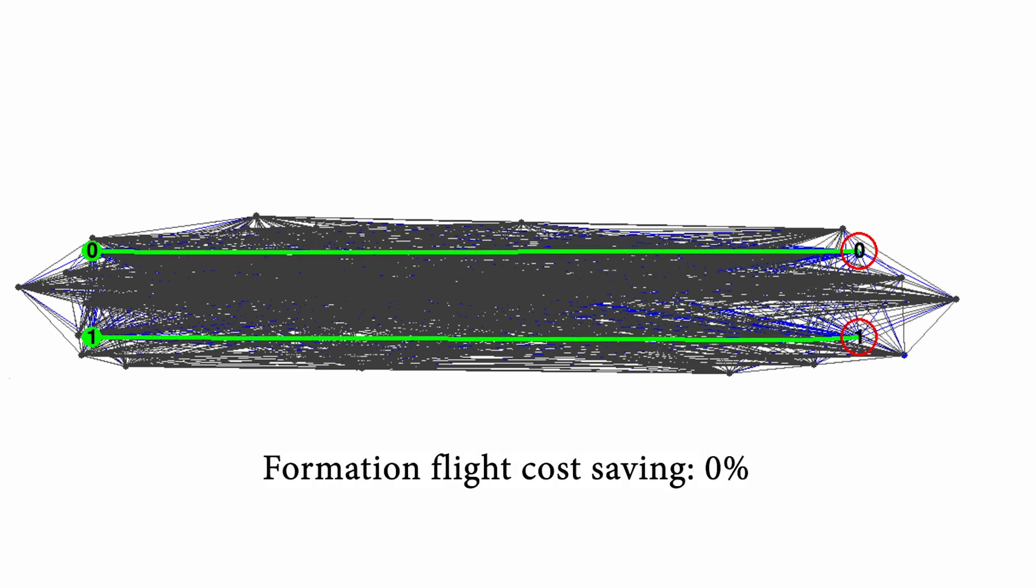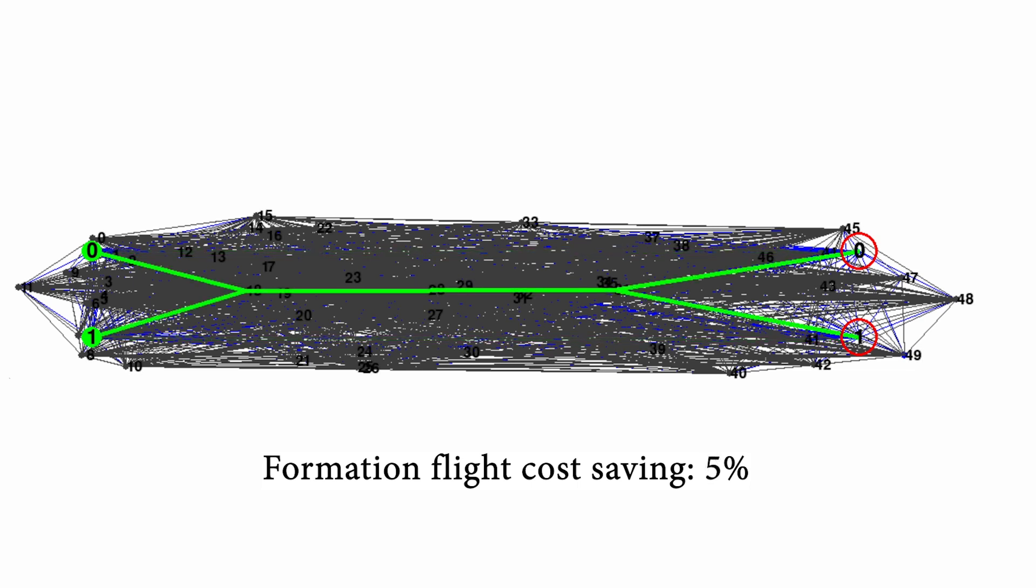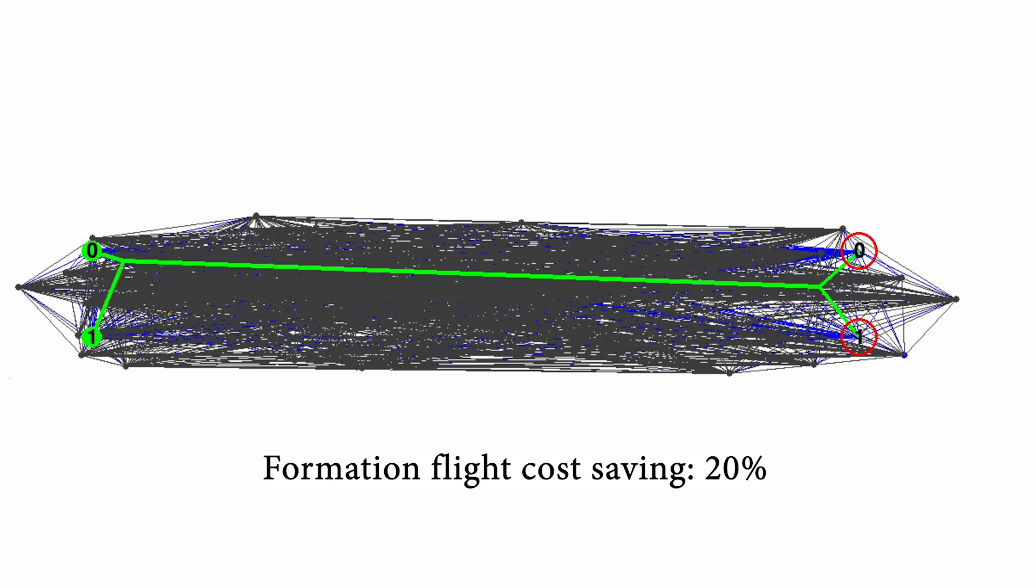Now, what's cool about this is that if we vary the cost saving for flying in a formation, for the same set of nodes and paths, we can see the effect that this has on the flight paths. So, if we set the cost saving to 0%, we see the path being direct from the start to the goal nodes. But if we adjust the saving to be as little as 5%, we then see the paths already choose to join one another. And as this power saving increases, we see the paths choose to join one another more quickly, but not without flying a greater total distance.